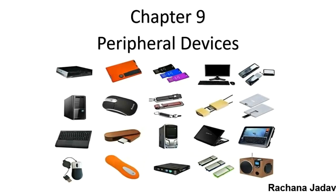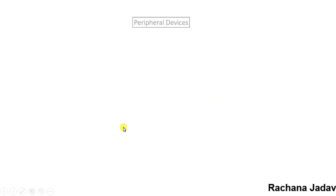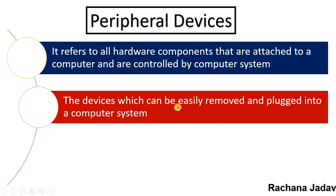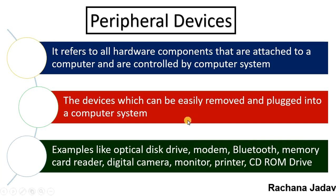Hello friends, today we are going to see Chapter 9: Peripheral Devices. So first, what is a peripheral device? A peripheral device refers to all hardware components related to the computer which are used to control the whole computer system, attached by wired or wireless connection. These are devices which can be easily removed or plugged in. Some examples are optical disk drive, modem, Bluetooth, memory card, and many more.